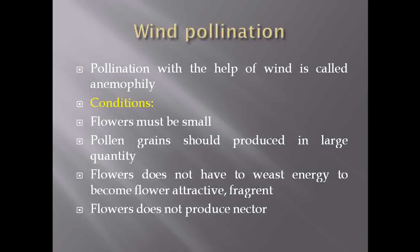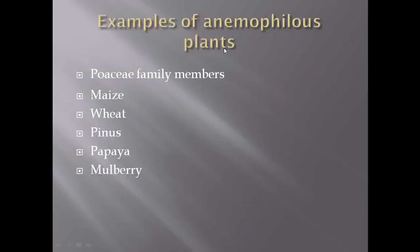Plants don't have to waste energy making the flower more attractive or fragrant. There is also no need to produce nectar, because pollination takes place with the help of wind. Examples of anemophilous plants include members of the Poaceae family, which show exerted and versatile anthers, like maize, wheat, members of Pineaceae, papaya, and mulberry — all of them show wind pollination.